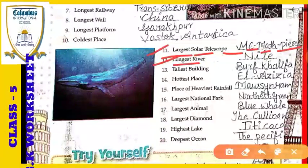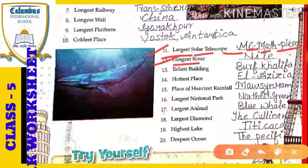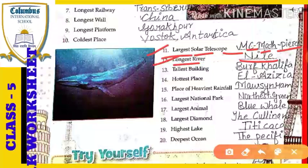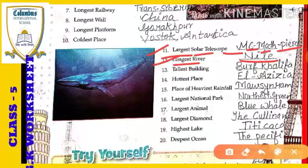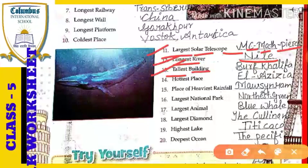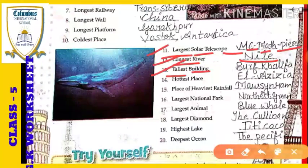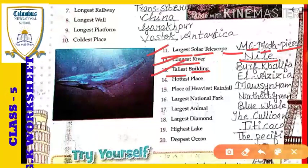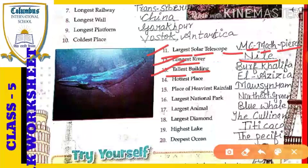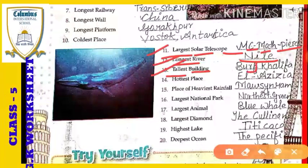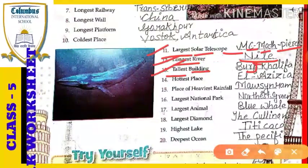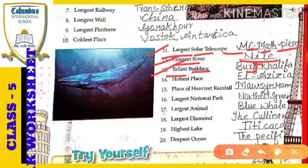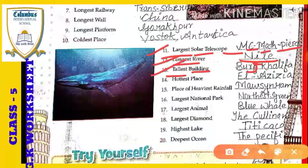Next: the longest river of the world. The longest river of the world is the Nile River. Next: the tallest building. Which building is called the tallest building of the world? That is the Burj Khalifa — Burj Khalifa is the world's tallest building.